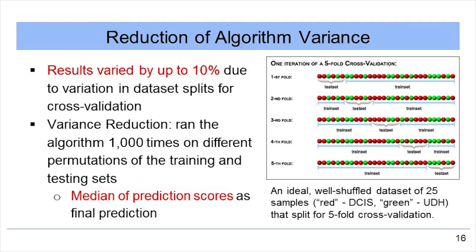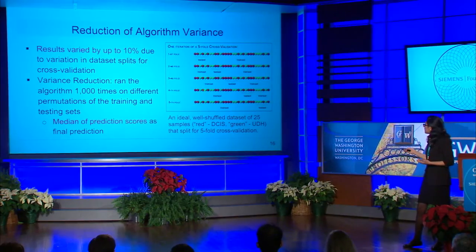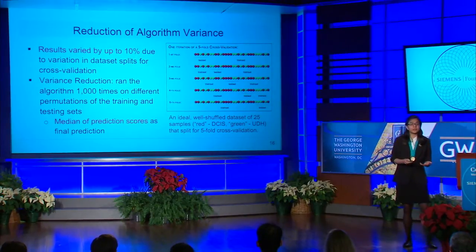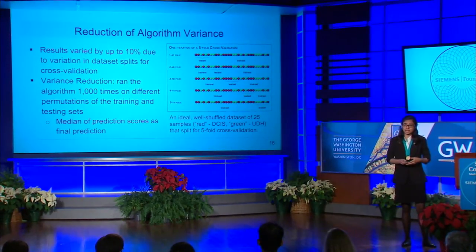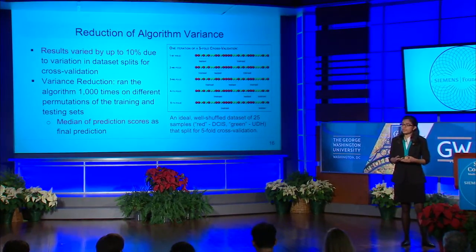The figure shows an ideal well-shuffled dataset in which both lesion categories — DCIS in red and UDH in green — are represented in each fold. To reduce the variance resulting from different randomized sets, we ran the algorithms 1,000 times on different permutations of the training and testing sets, then used the median of the prediction scores to prevent outliers from skewing the final prediction. Our scoring method is more reliable and consistent than the scoring methods of prior work.